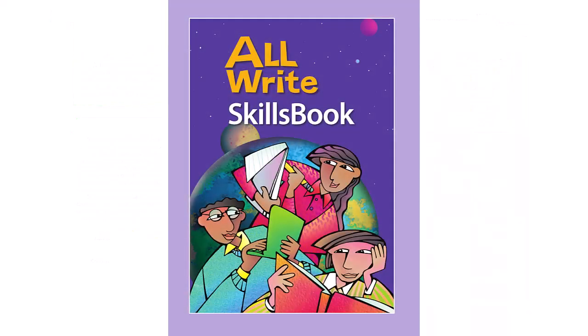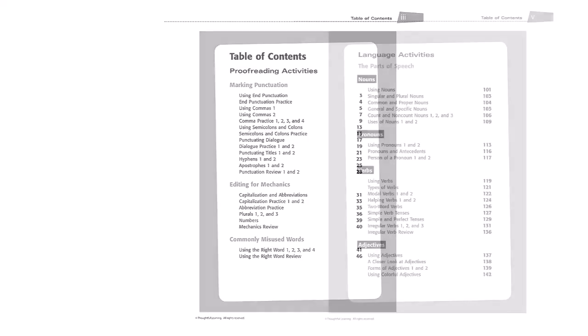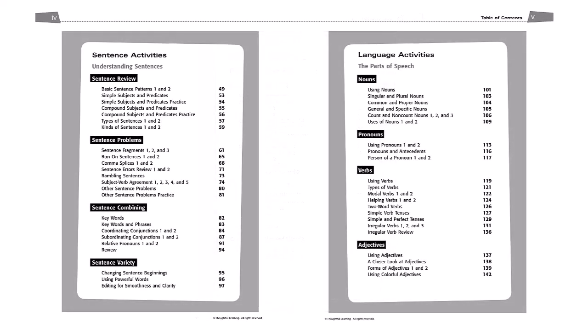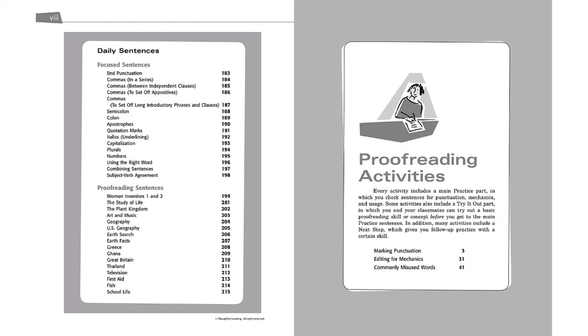Now let's take a look at the AllWrite Skills book. It contains activities that teach all of the rules in the proofreader's guide. You'll find lots of practice for marking punctuation, editing for mechanics, commonly confused words, creating and combining sentences and avoiding sentence problems, and activities for nouns, pronouns, verbs, adjectives, adverbs, prepositions, interjections, and conjunctions. You'll also find a whole section of mini lessons that you can use to reinforce student learning, as well as daily sentence activities.